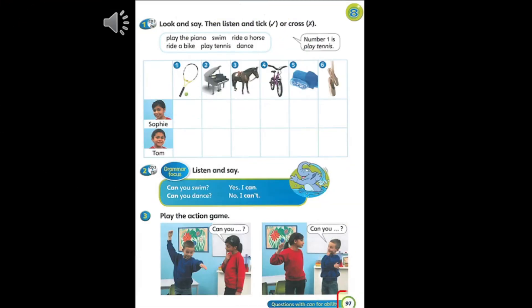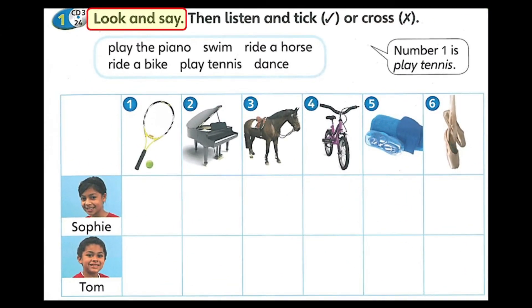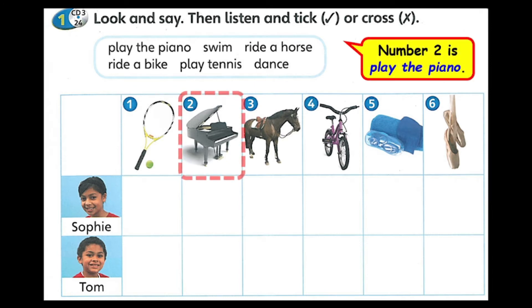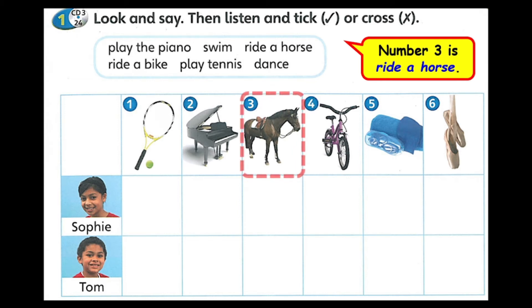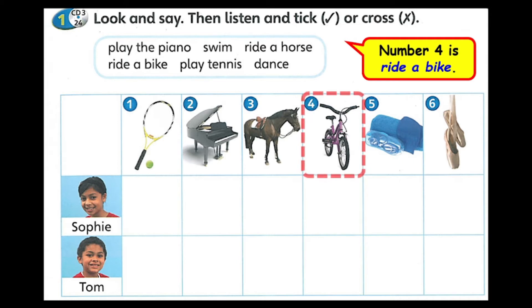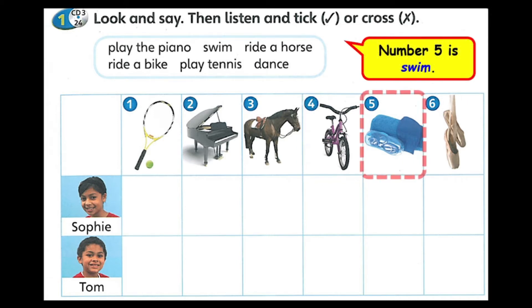Students' Book, page 97. 1. Look and say, then listen and tick or cross. Number one is play tennis. Number two is play the piano. Number three is ride a horse. Number four is ride a bike. Number five is swim. Number six is dance.